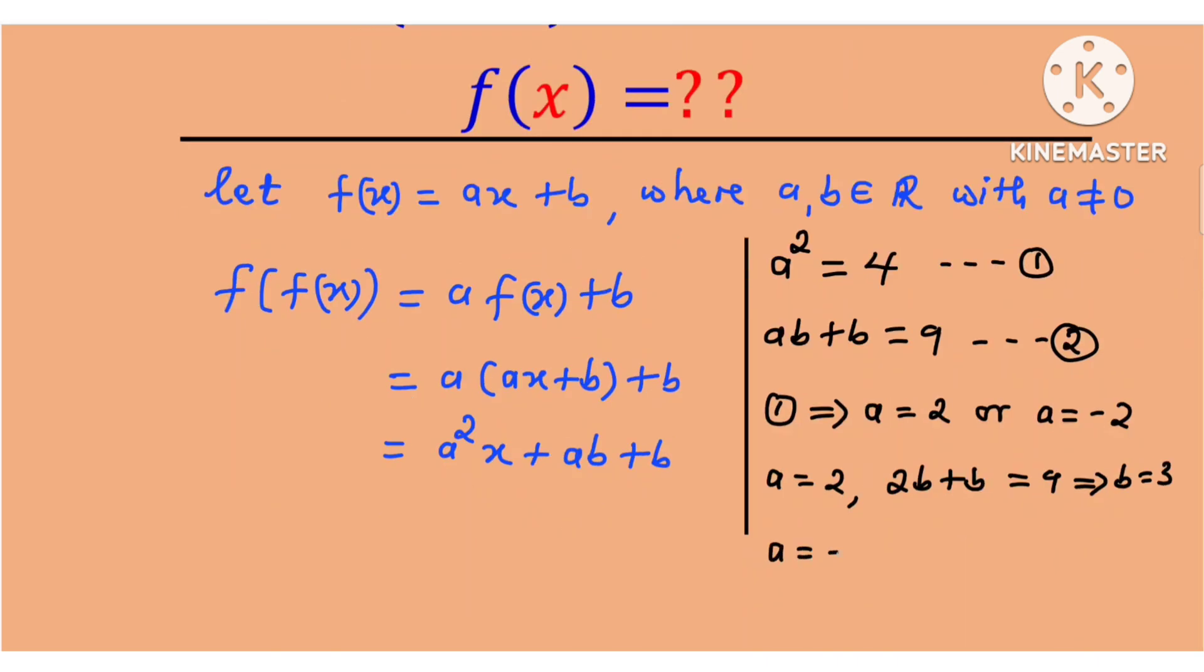And if a is negative 2, then we have negative 2b plus b which is equal to 9, and this implies that b is equal to negative 9.